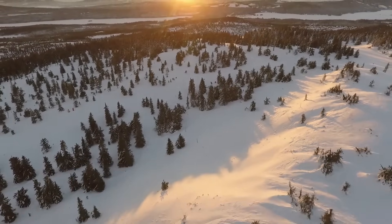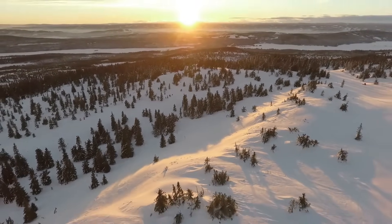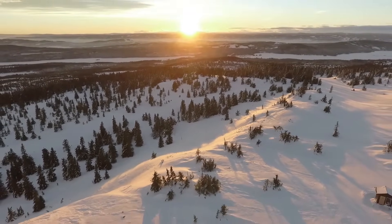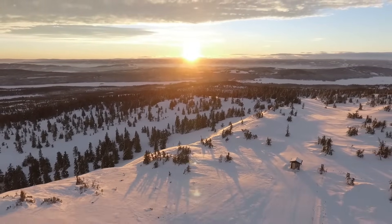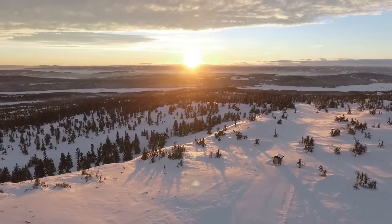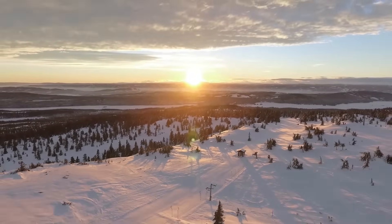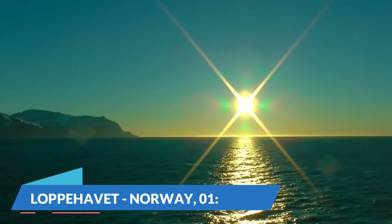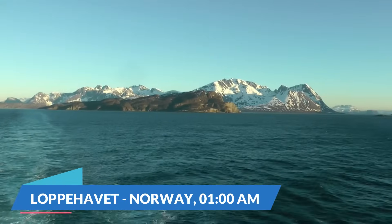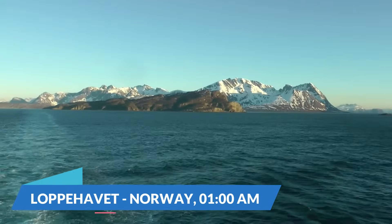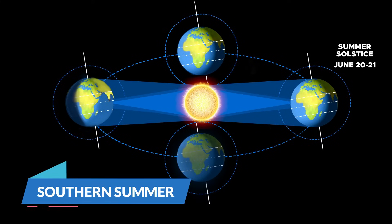During summer in the northern hemisphere, the Arctic pole continuously receives sunlight for a period of six months. If you are staying beyond the latitude of 66.5 degrees north, you can't differentiate between day and night and will need a 24-hour watch. As Norway is located closer to the arctic circle, it is called the land of the midnight sun.